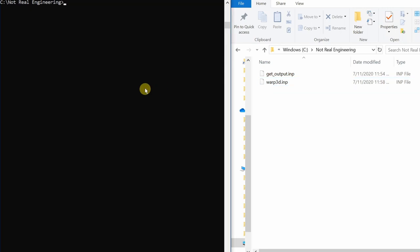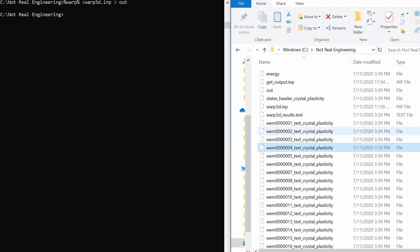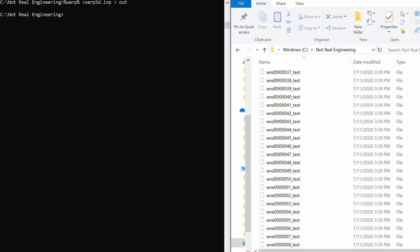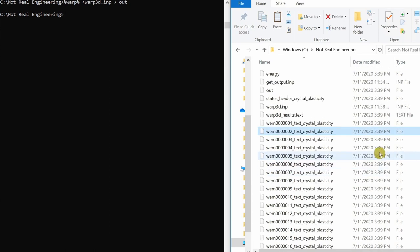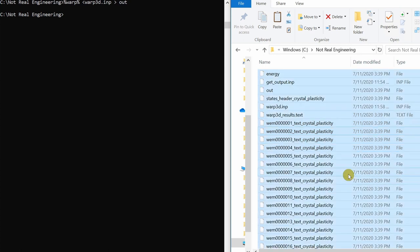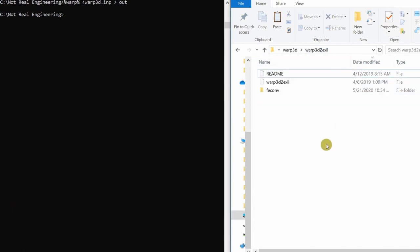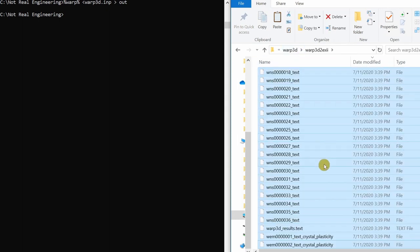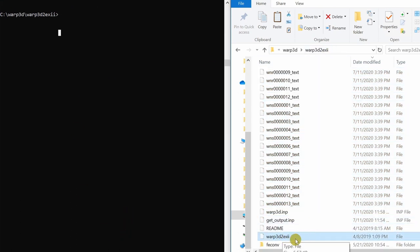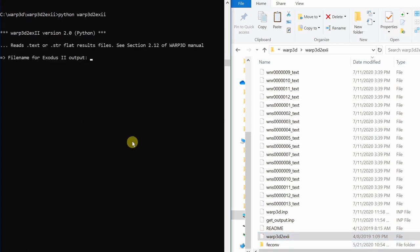Once you have these two files ready, you just have to submit the job using this command. If you don't know this command, check out my first video. And you will see bunch of files are getting created over here. And we will have all the files over here. Now next step is to create a ParaView compatible file using these flat output files. For that, just copy paste all these files into this directory in WARP3D folder. When you download the WARP3D, you will have this folder over here. Copy paste all the files over here.